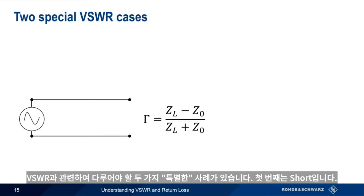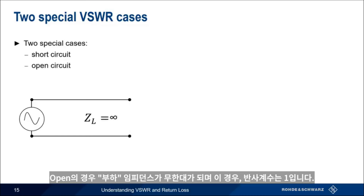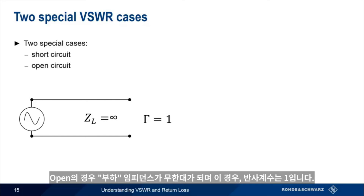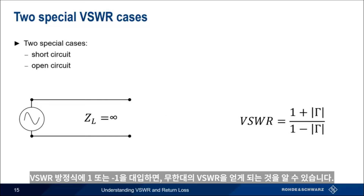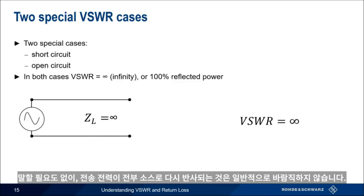There are two special cases we should discuss in terms of VSWR. The first is a short circuit: the load impedance equals 0 and gamma equals minus 1. In the case of an open circuit, load impedance is infinite and gamma equals 1. If you plug either 1 or minus 1 into the VSWR equation, you get the same result — a VSWR of infinity — which means 100% of the forward power is being reflected back towards the source. Needless to say, having 100% of the forward power reflected back to the source is usually neither expected nor desired.